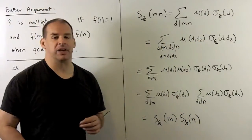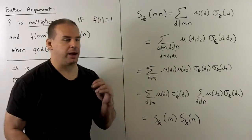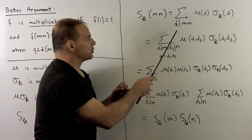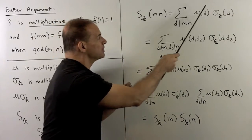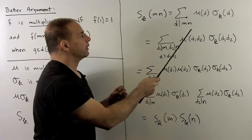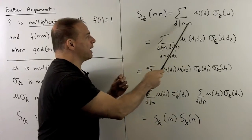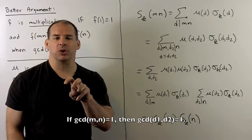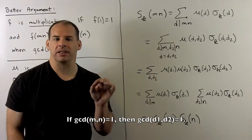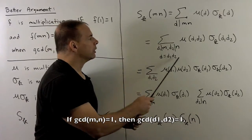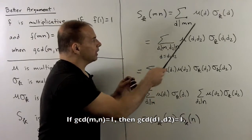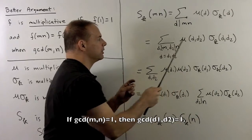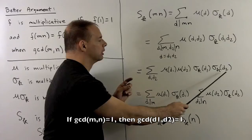Now to show that S sub k is multiplicative, let's pick m and n relatively prime. We'll write out the definition. So we're going to sum over divisors d of m n, mu d, sigma sub k d. Now because m and n are relatively prime, if I have a divisor of m times n, I can split that into the part that divides m and the part that divides n. So factor each d out as d1 d2. Then we use the multiplicative property to pull these apart.